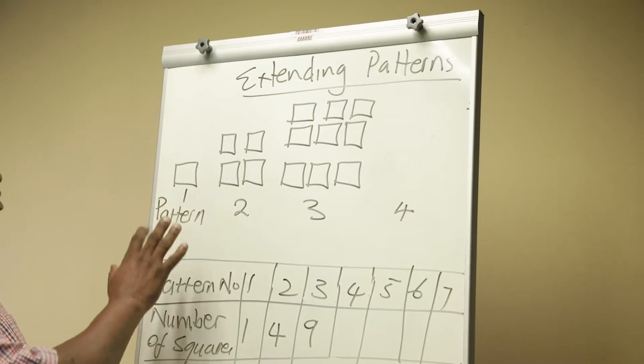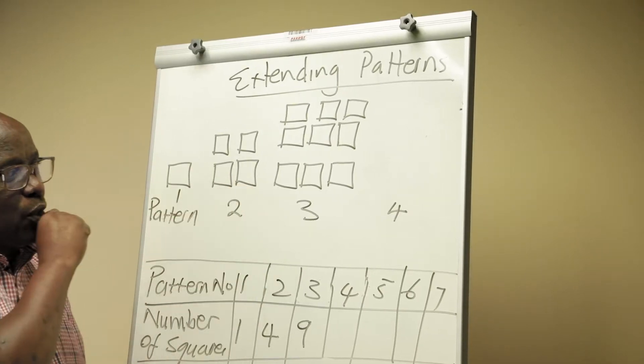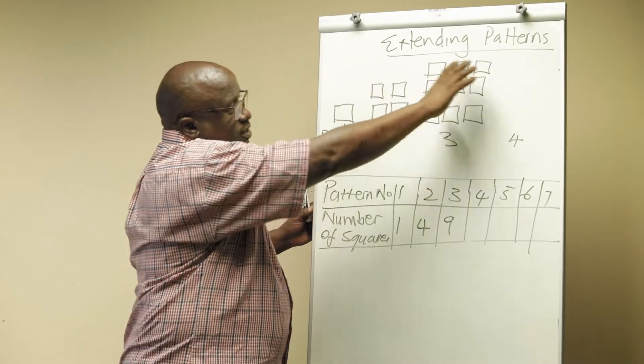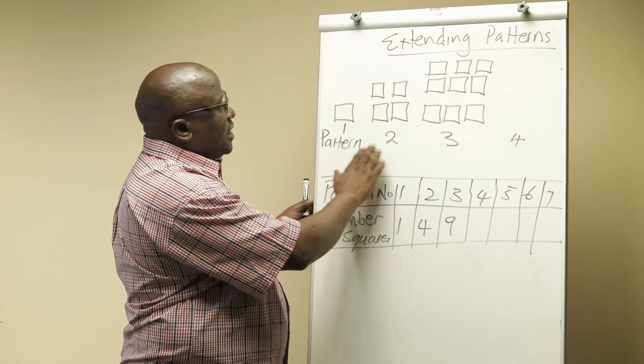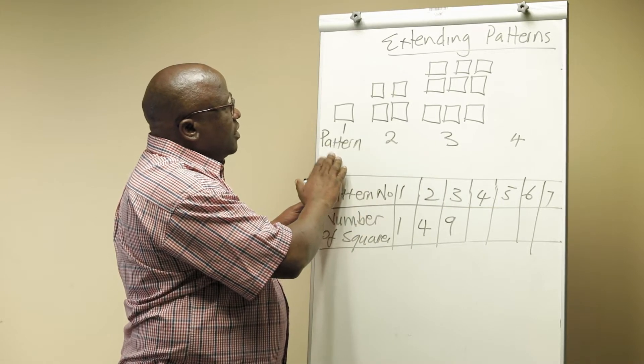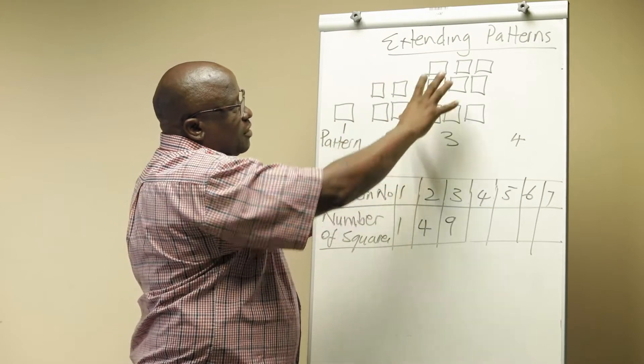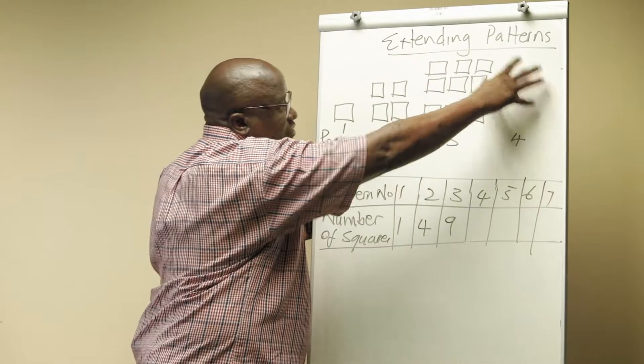If you look at what I've drawn on the board, you realize that I have squares that are drawn up here, and then I've written pattern number. Pattern number 1 has got a square, pattern number 2 has got squares, pattern number 3 has got squares, and I left pattern number 4.